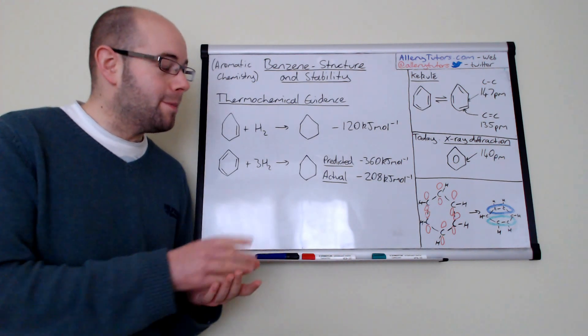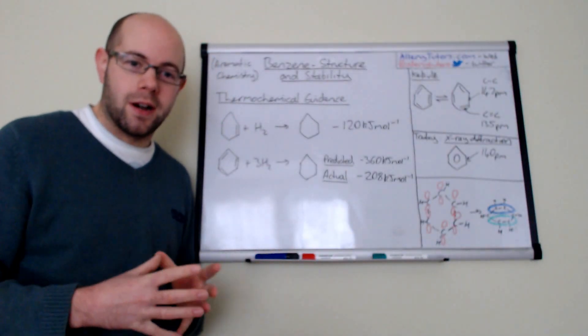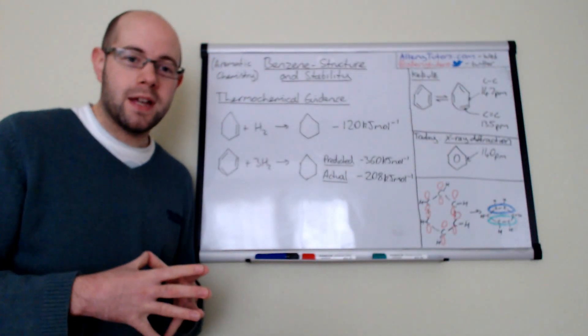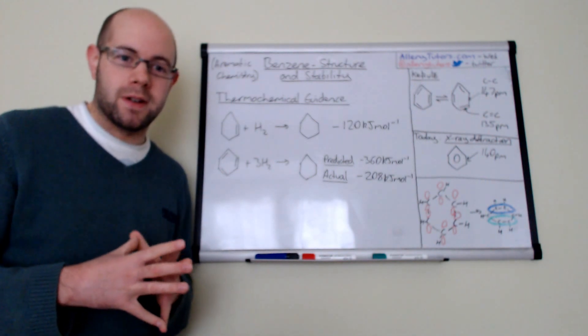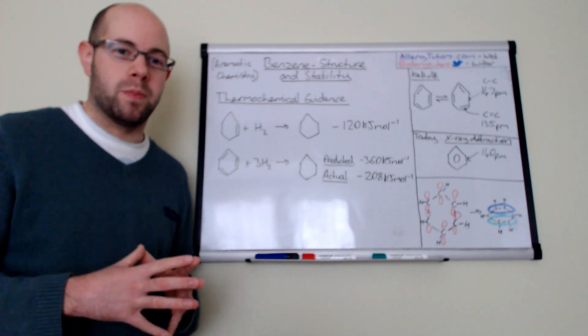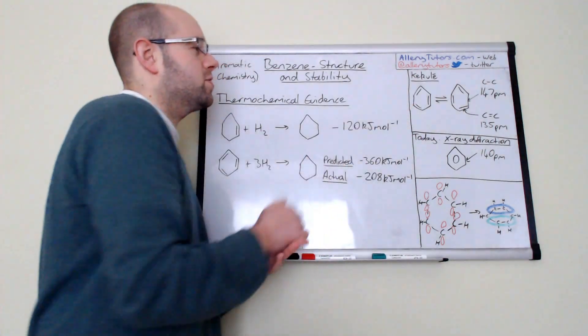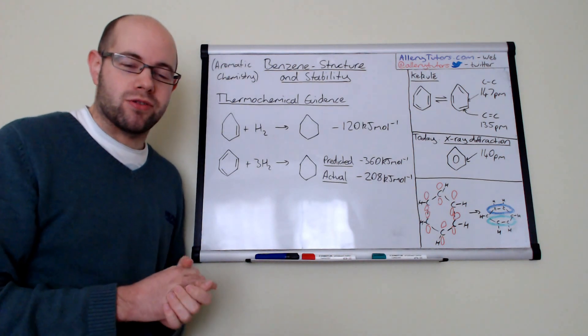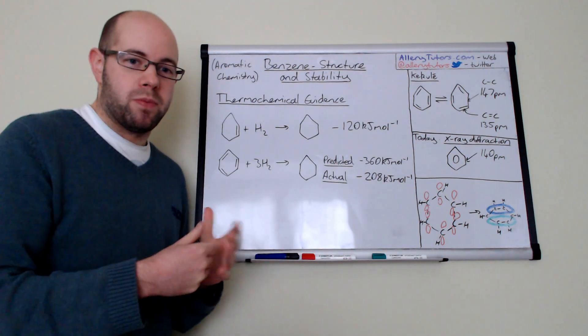Basically what he came up with was an idea that you had a cyclic compound, and to satisfy the formula that Faraday discovered which is C6H6, also known as Kekulé structure.